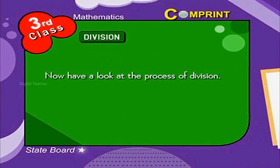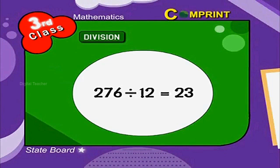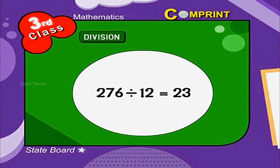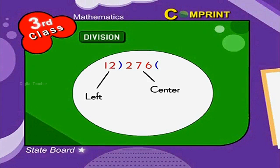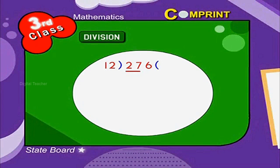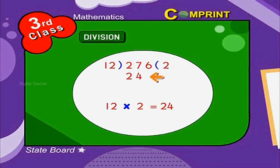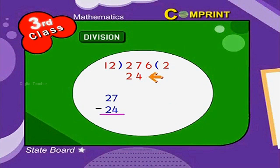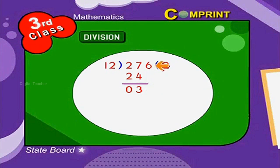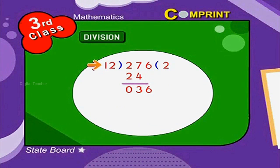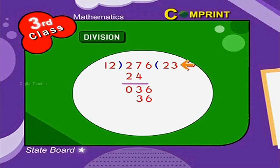Now have a look at the process of division. 276 divided by 12. First, we should arrange the numbers in this method — divisor at the left and dividend at the center. First, multiply the first two digits of the dividend with 12. That is, 12 into 2 is equal to 24. Subtract 24 from 27; the remainder is 3. Take 6 from the above number to the bottom. Now the value is 36. Again, 12 should be multiplied up to the possible times. Here, we get 36 by 12 into 3. Then the remainder is 0.